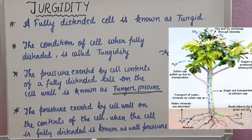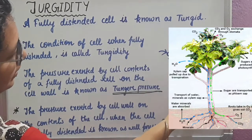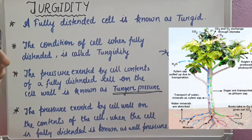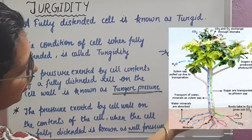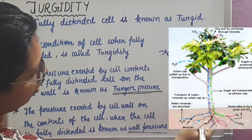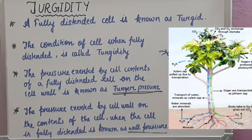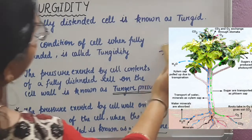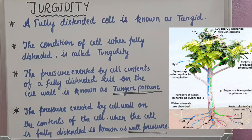The pressure exerted by the cell wall on the contents of the cell when the cell is fully distended is called wall pressure. Here you can see an example — a picture of a plant that is turgid, shown in turgid condition.